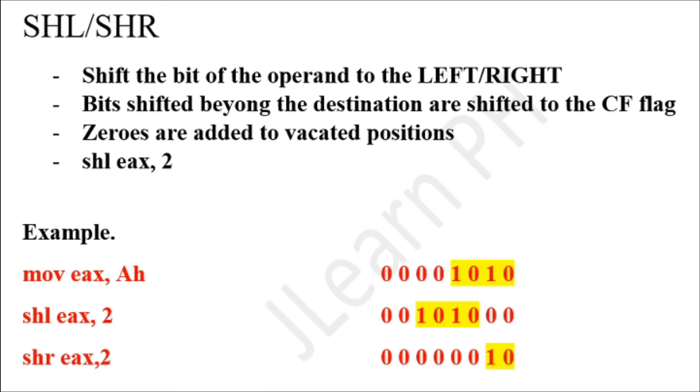SHL shifts the bits of the operands to the left, while SHR shifts the bits to the right. It is important to note that the bits shifted beyond the destination are shifted to the CF flag. Zeros are added to the vacated positions.